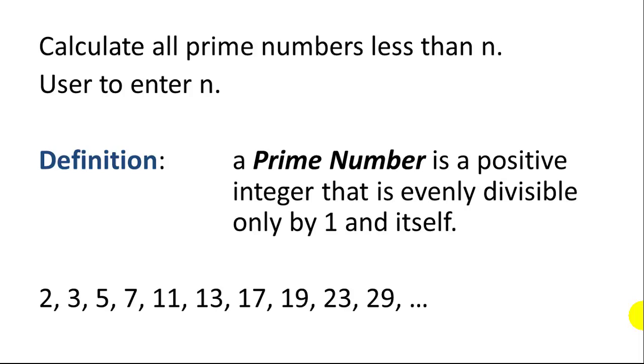The prime numbers under 30 are 2, 3, 5, 7, 11, 13, 17, 19, 23, 29. You can see these numbers are all only divisible by one and themselves.